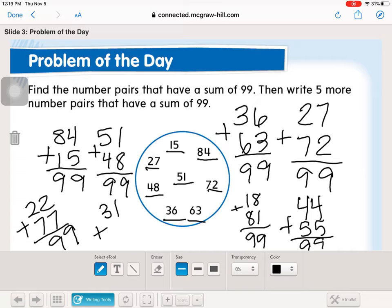22 plus 77. 31 plus 68. We could go on and on, right? We could do 32 plus 67, 38 plus 61. There's lots and lots and lots of combinations. Alright, let's keep going.